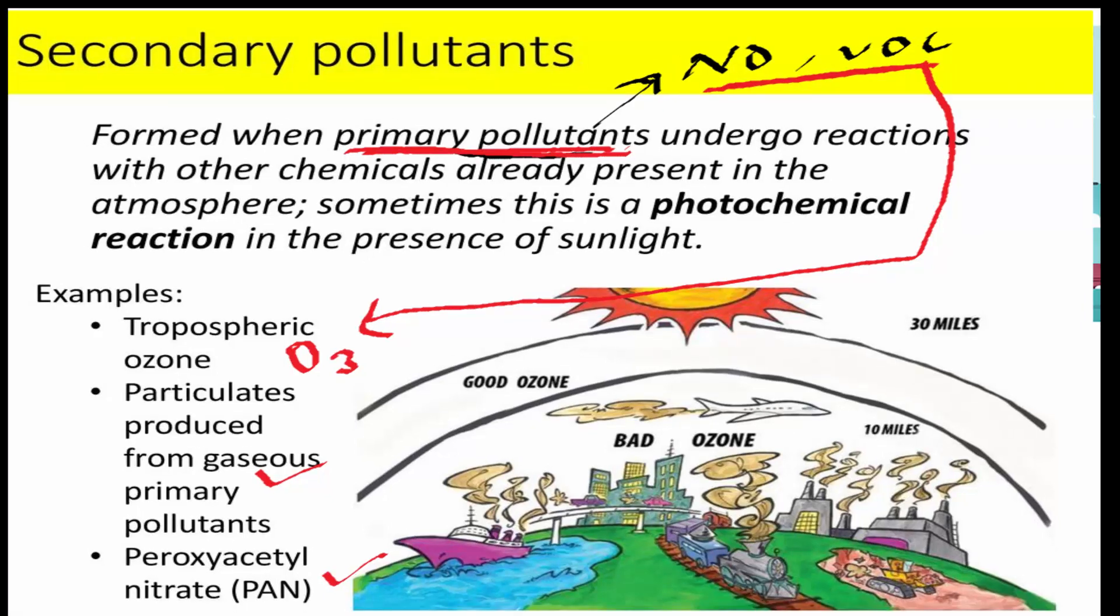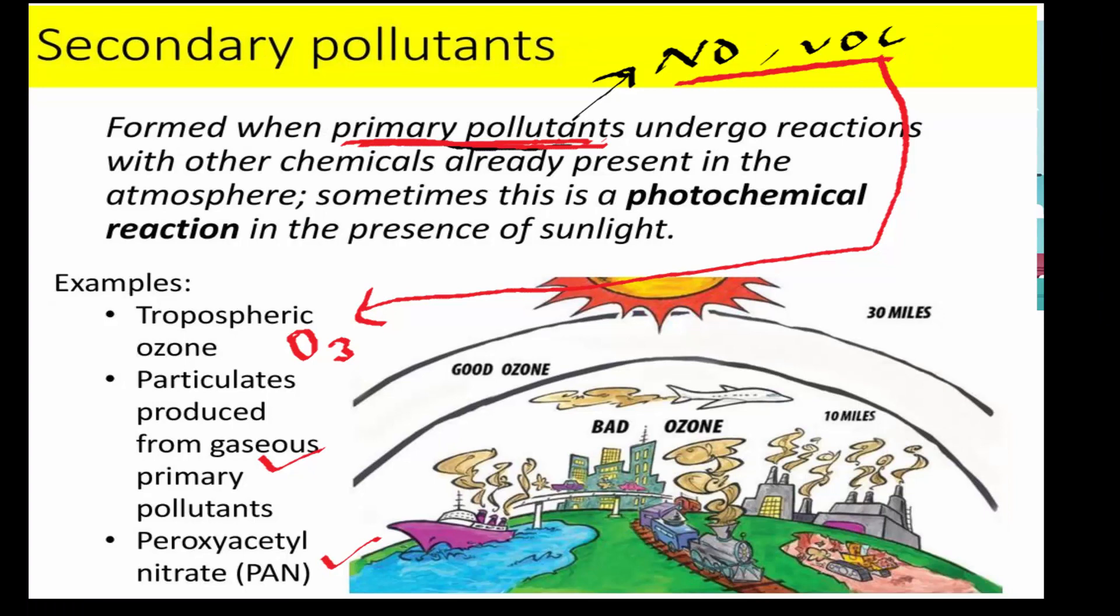Examples are tropospheric ozone, particulates produced from gaseous primary pollutants and PAN. These three form photochemical smog and these are secondary pollutants.